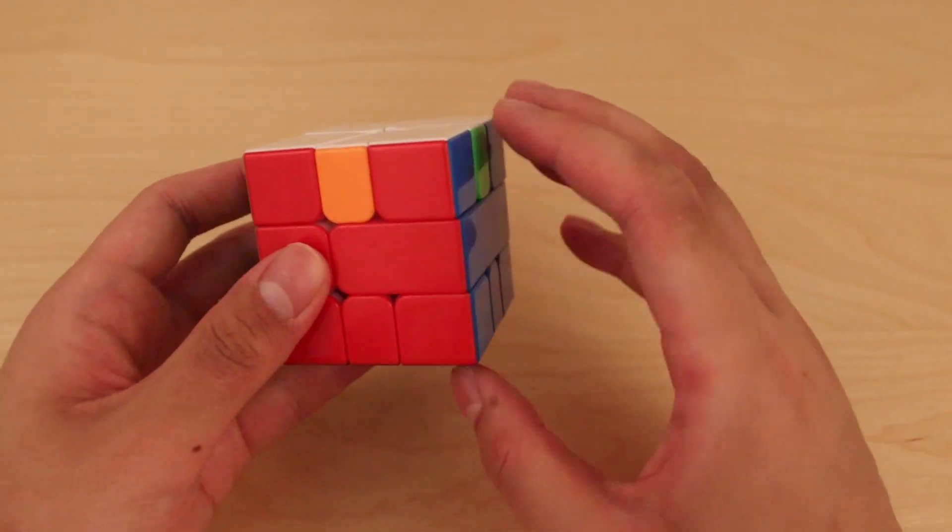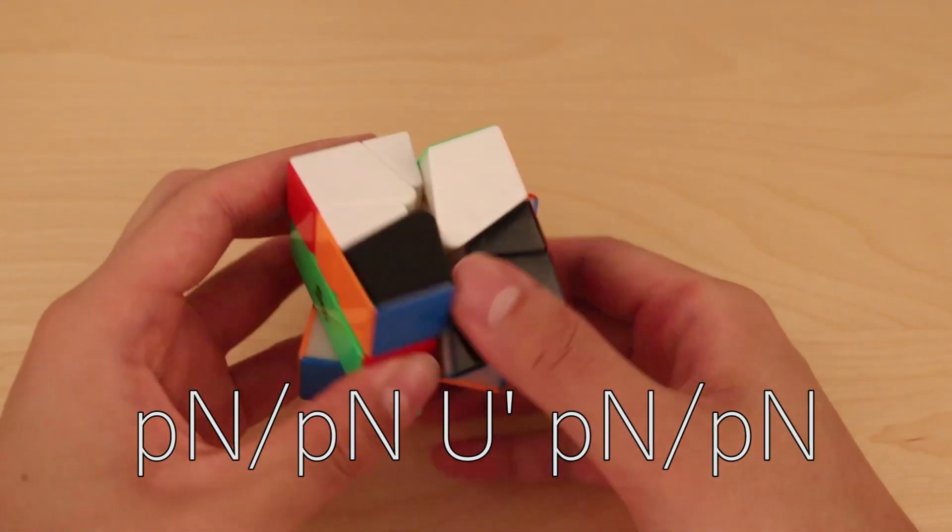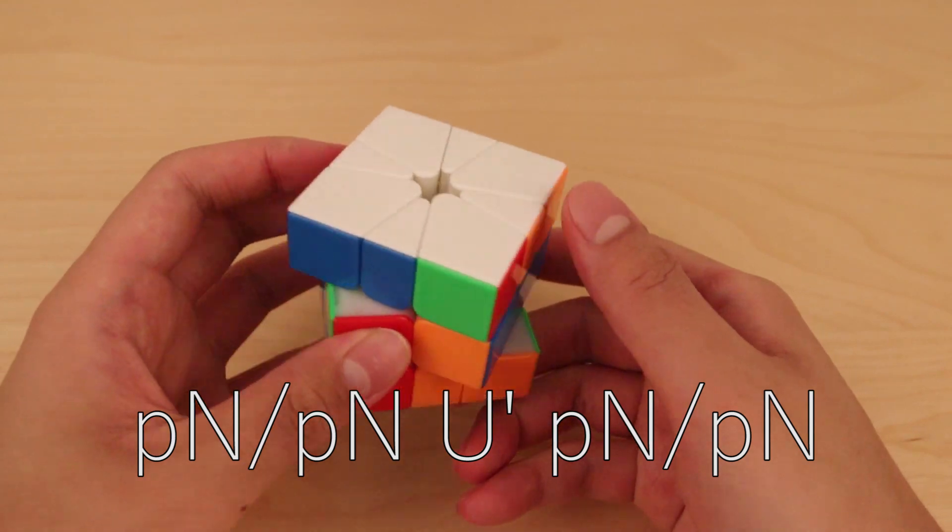Another nice option is pn pn twice. So pn pn first, and then pn pn again.